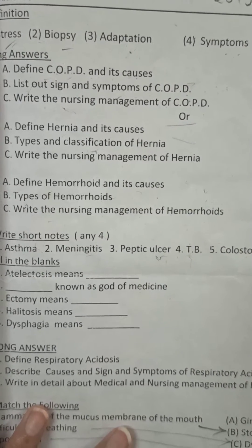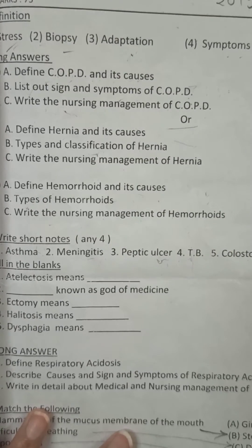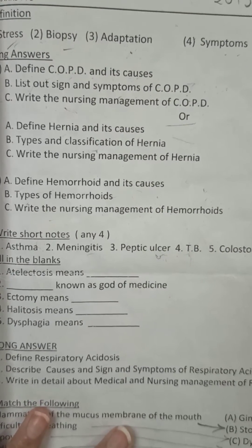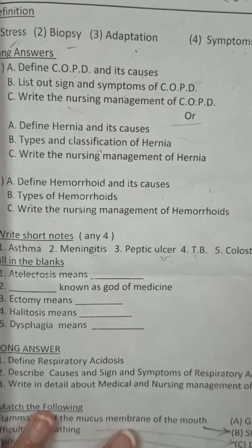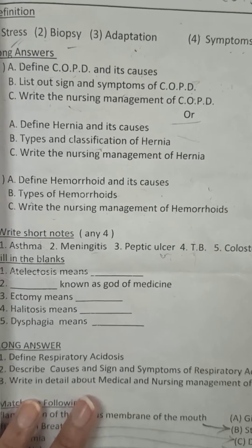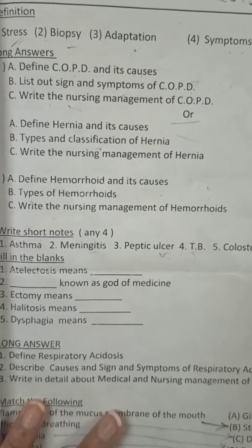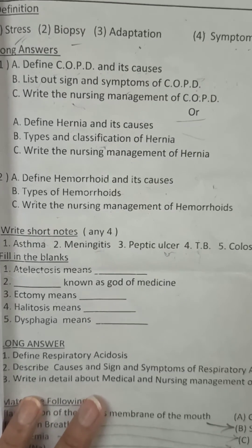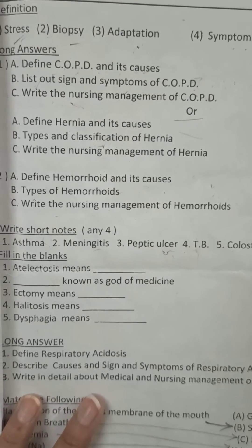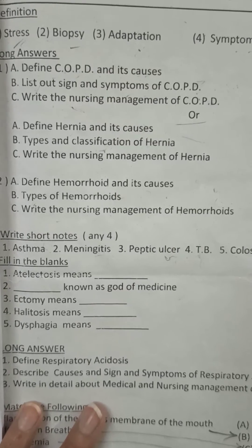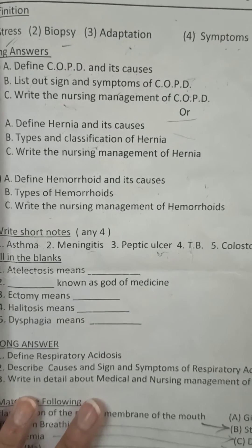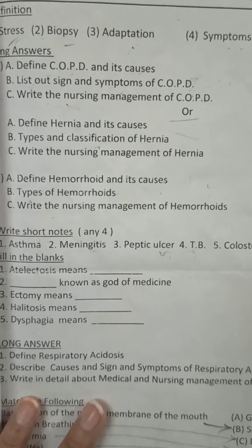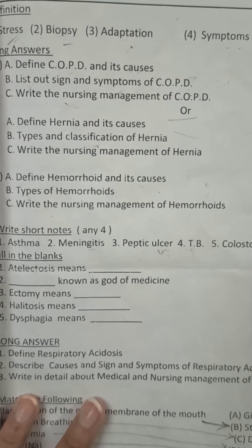COPD includes a group of three disorders: chronic bronchitis, emphysema, and asthma. In COPD, mainly two or sometimes all three disease conditions can be present together.